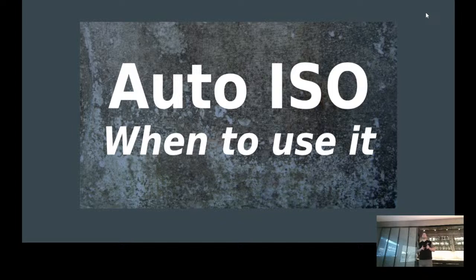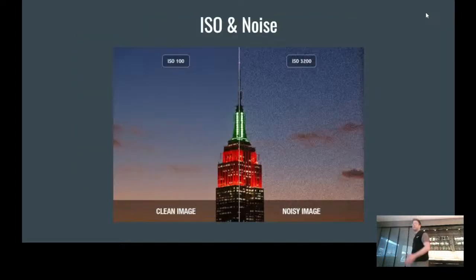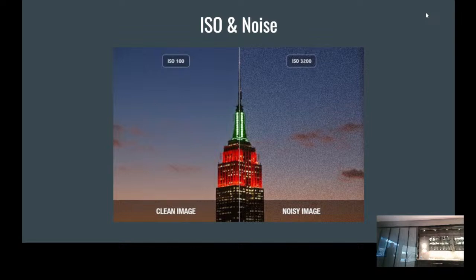Every camera will have a different maximum ISO. So in the scale shown here, 100 might be the lowest and 3200 might be the highest — you have all that wiggle room to change the number to get exactly what you need for the image.